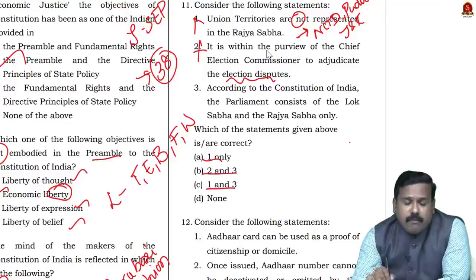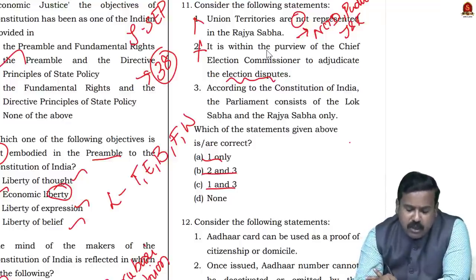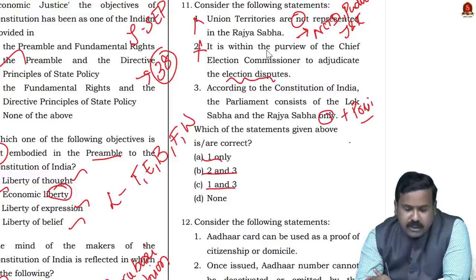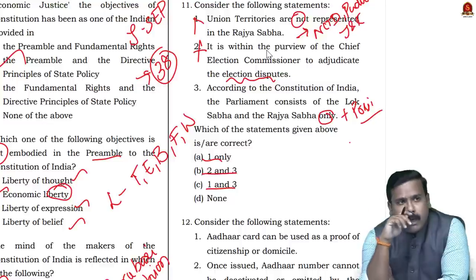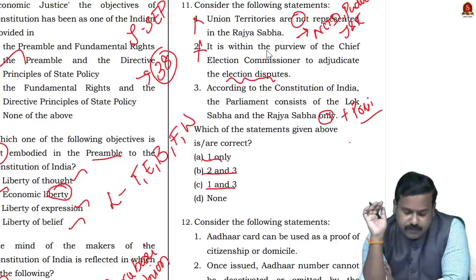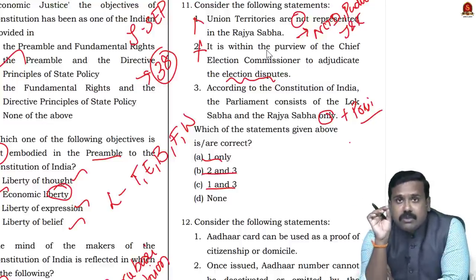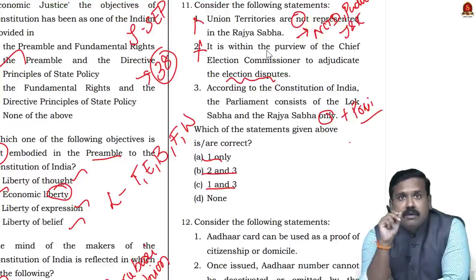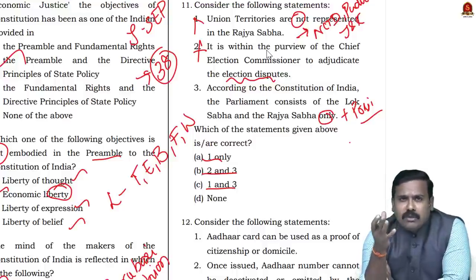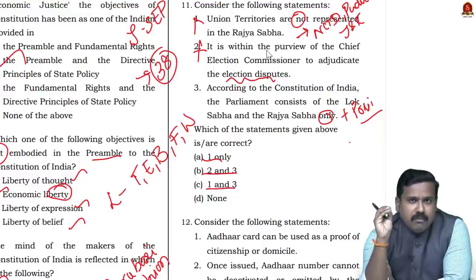The third statement says Parliament consists of Lok Sabha and Rajya Sabha only — this is wrong. The constitution says Parliament consists of Lok Sabha, Rajya Sabha, AND the President. Even though the President is not a member, he is still an integral part of Parliament, because only after his assent does a bill become an act.